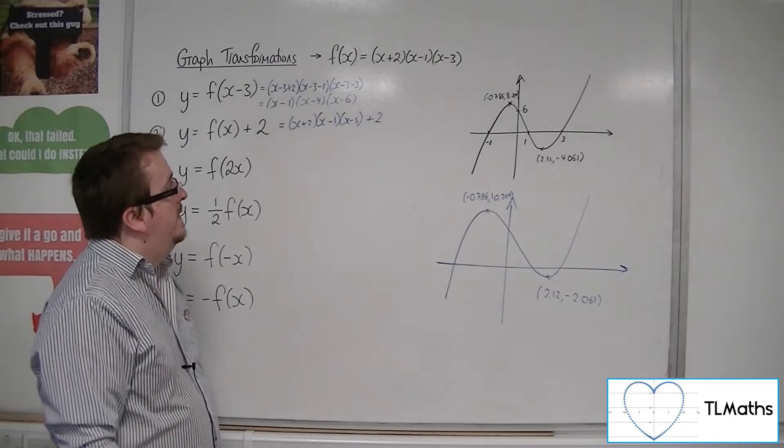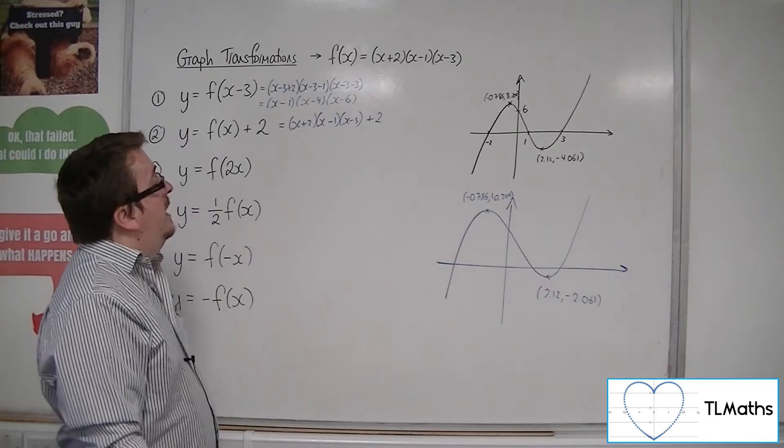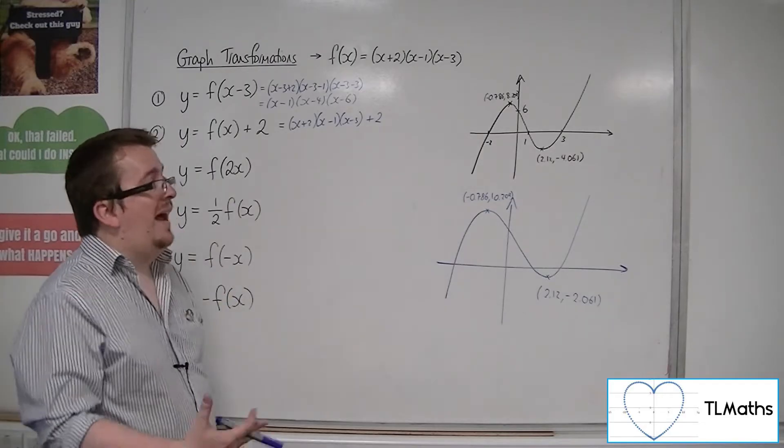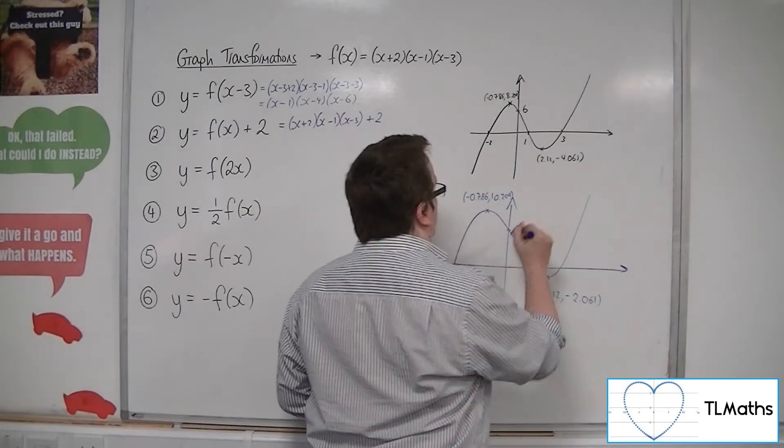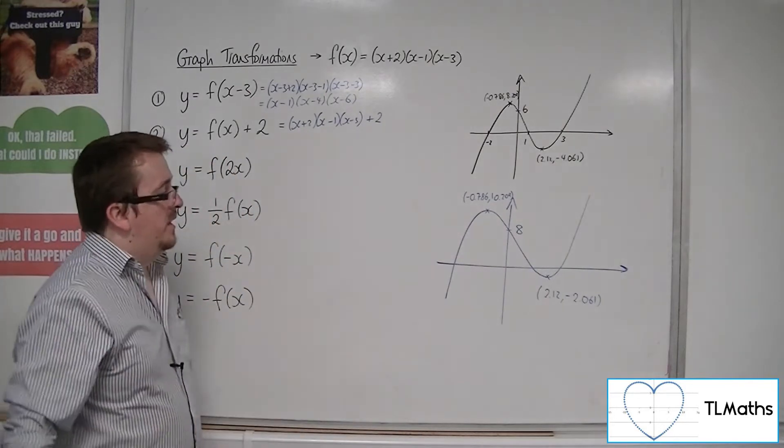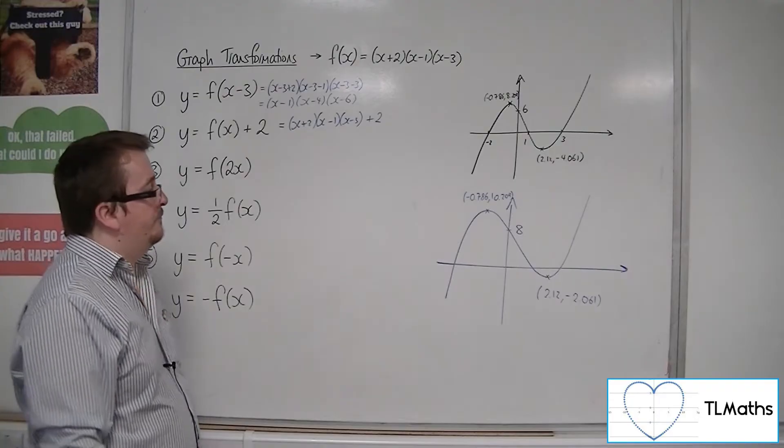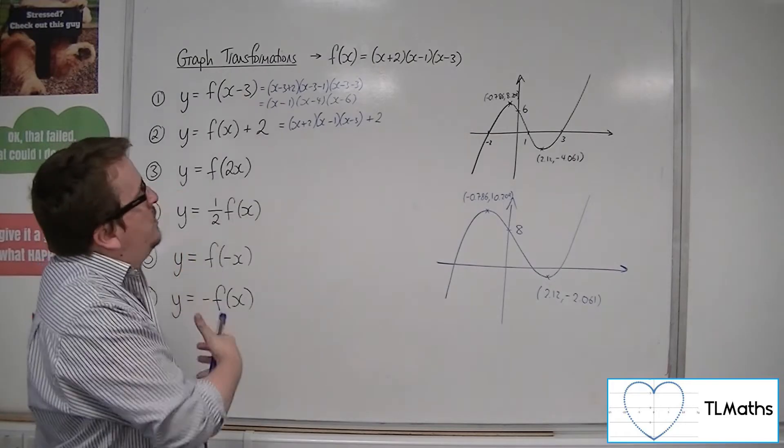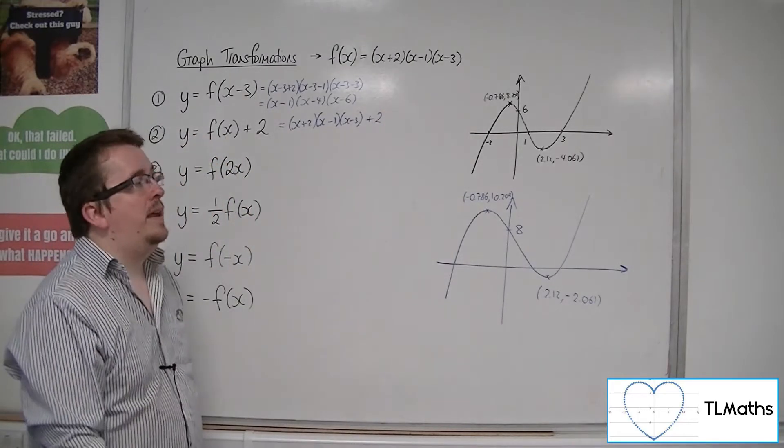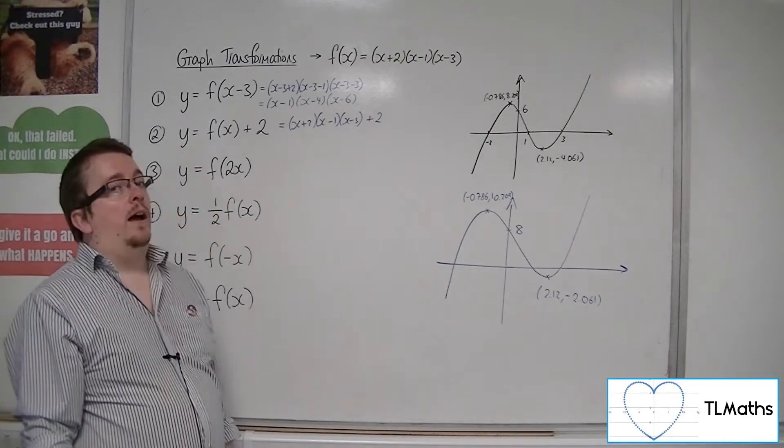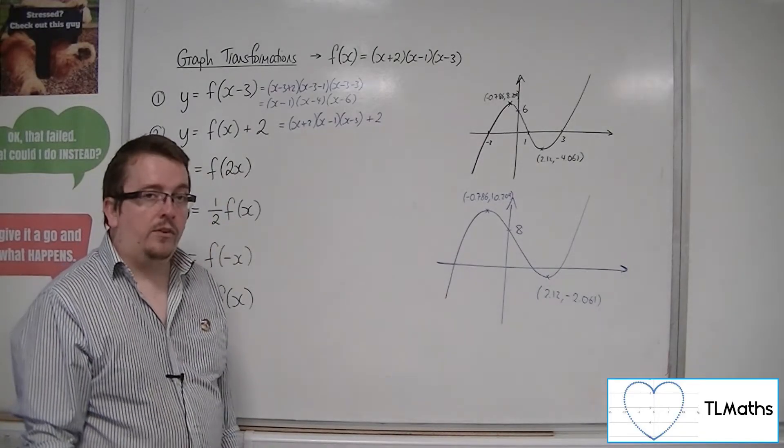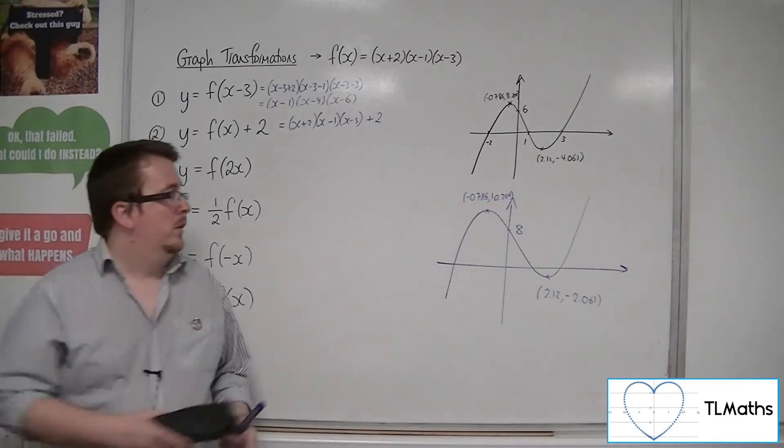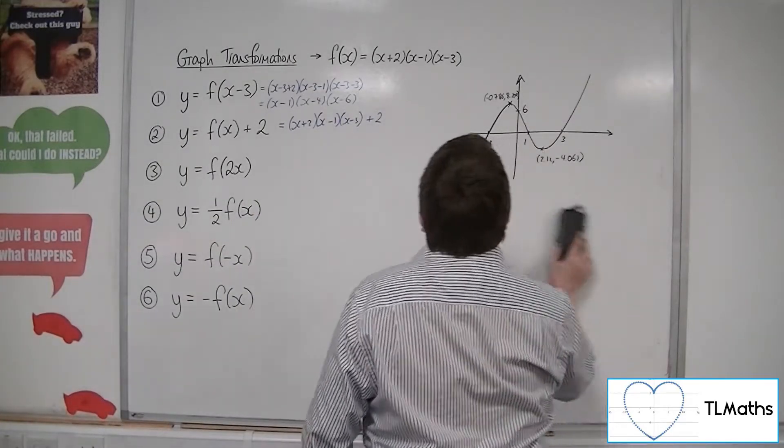But certainly not by hand. You wouldn't want to do that by hand. We could work out where it's crossing the y-axis, because 2 times -1 times -3 is still 6, add 2, it'll be 8. So it'll still be crossing there at 8. But that's really as far as we can go with it. So, in all likelihood, if this was an examinable question and you were asked to translate that, it will most likely be parallel to the x-axis, and not the y-axis, because it leaves too many unanswered questions.